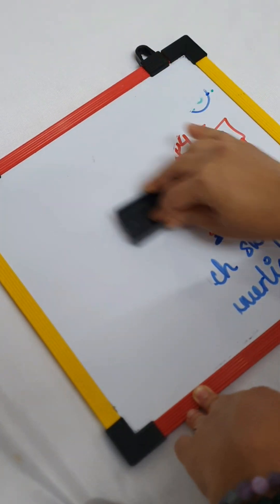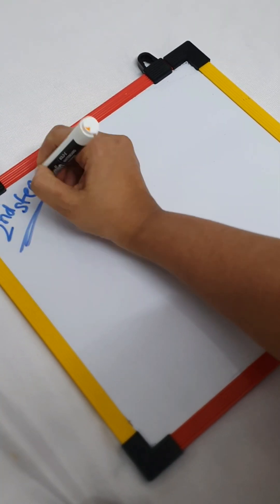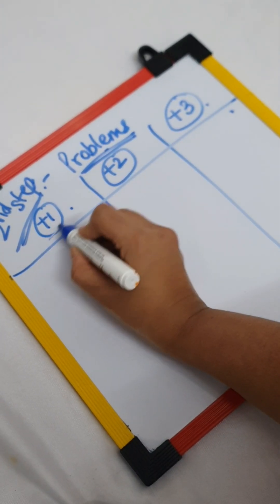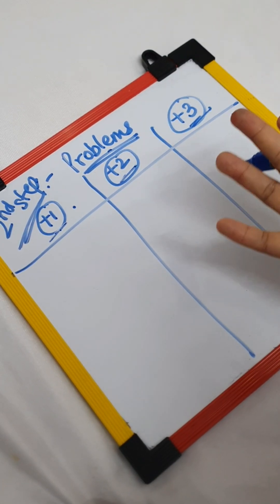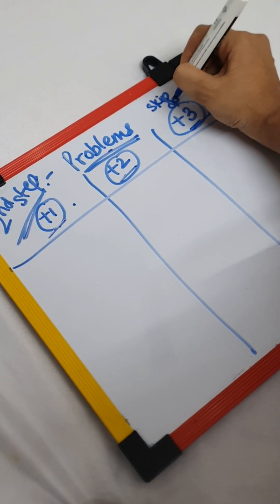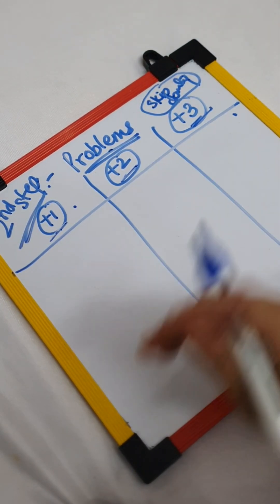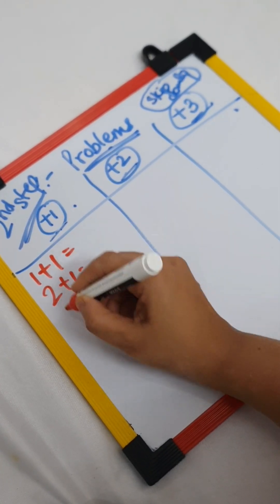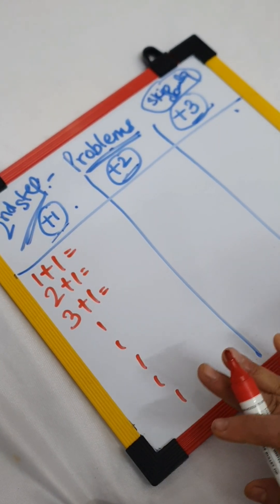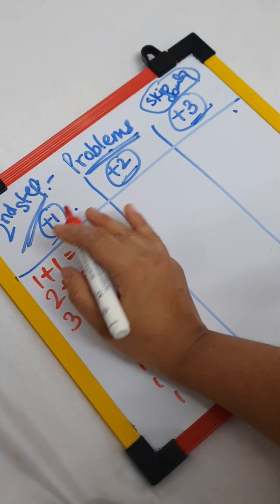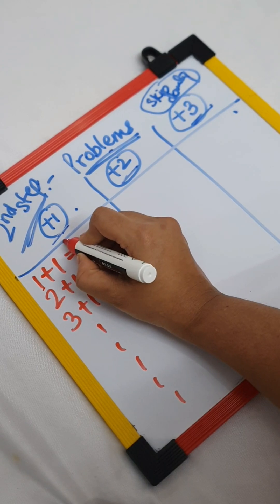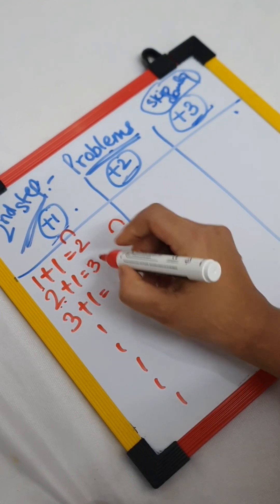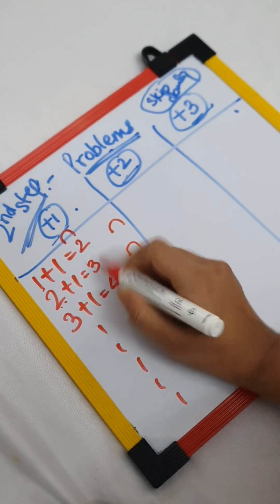Once you're done with this, the second step is to give problems directly, but these problems you have to give with the help of sets — set of plus 1, plus 2, and plus 3. Because kids only know skip counting at this point, they'll count by skipping that particular number. On the first day, give everything related to plus 1: 1 plus 1, 2 plus 1, 3 plus 1, and so on. The child will mentally go to the number 1, jump 1 time — answer is 2. Go to 2, jump once — 3. Go to 3, jump once — 4. Likewise they'll finish the page.